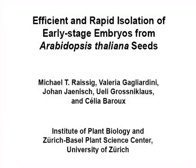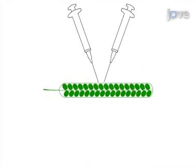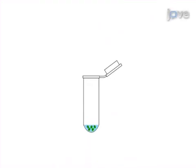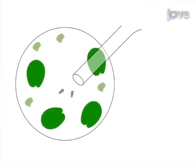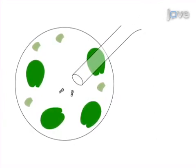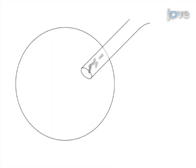The overall goal of this procedure is to isolate young plant embryos. This is accomplished by first dissecting the seeds. The second step is to gently crush the seeds in an isolation buffer. Next, embryos are screened for and then collected by micro aspiration under an inverted microscope.